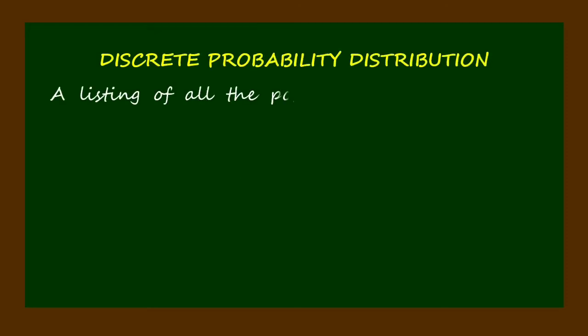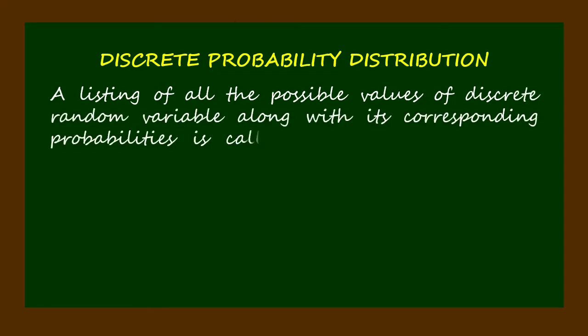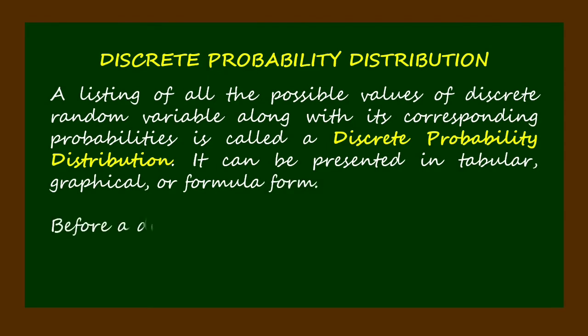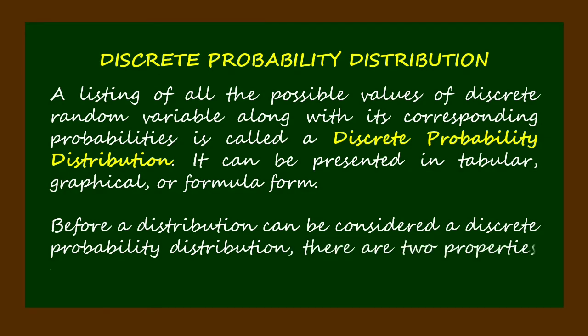And now let us explore the concept of discrete probability distribution. A listing of all the possible values of a discrete random variable, along with its corresponding probabilities, is called a discrete probability distribution. It can be presented in tabular, graphical, or formula form. Before a distribution can be considered a discrete probability distribution, there are two properties that must be satisfied.